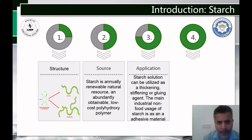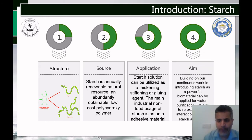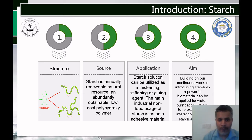The applications of starch are many, beside being the main source of food. Starch can be used as a thickening agent, in the medicinal industry as an excipient, and as an adhesive material. In this work, we build on our continuous work to introduce starch as a powerful biomaterial applicable for water treatment. We examine the interaction of starch with minerals and salts — cations and anions — both in bulk solution and in the adsorbed state.